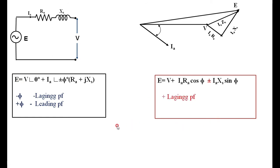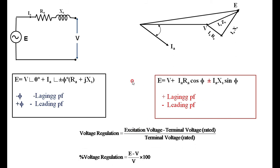Once we know the value of E, voltage regulation is calculated as (E − V) / V × 100. Here, the positive sign is for lagging power factor and negative for leading power factor in the approximate formula. This is how we find the regulation by the EMF method.